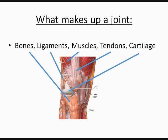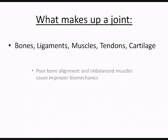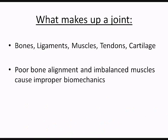Then you have your muscles. Muscles move the joint and move the bones — bones don't just move themselves. Tendons connect the muscles to the bone. And cartilage is inside the joint, connects to the bone, and protects the bone from rubbing on other bone.